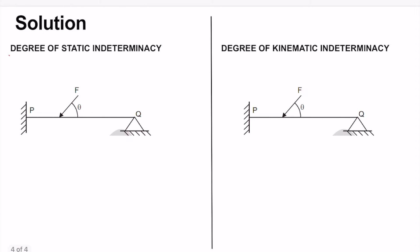Let us solve for the degree of static indeterminacy first. The degree of static indeterminacy equals the number of unknown reactions minus the number of equilibrium equations. Let us identify the unknown reactions for beam PQ.